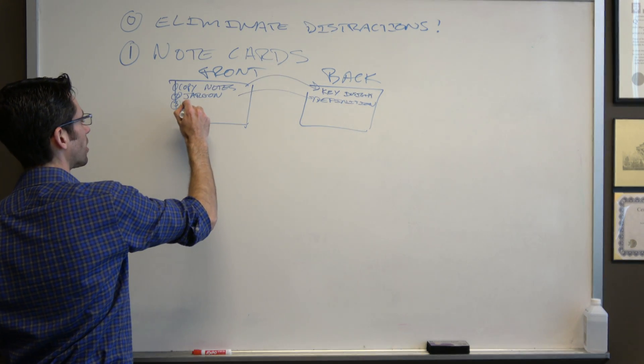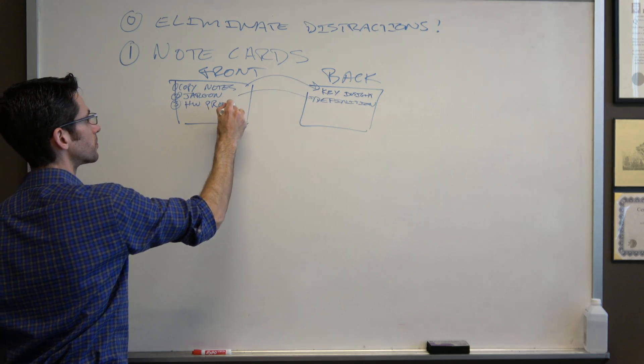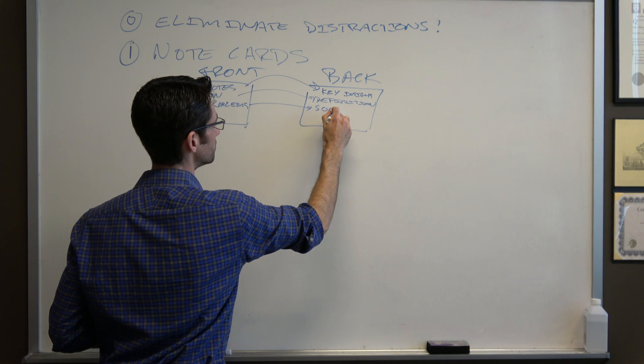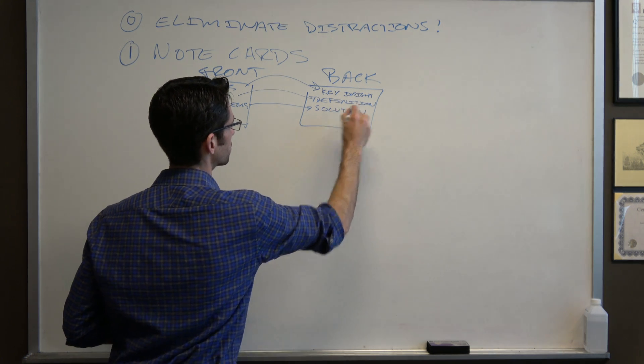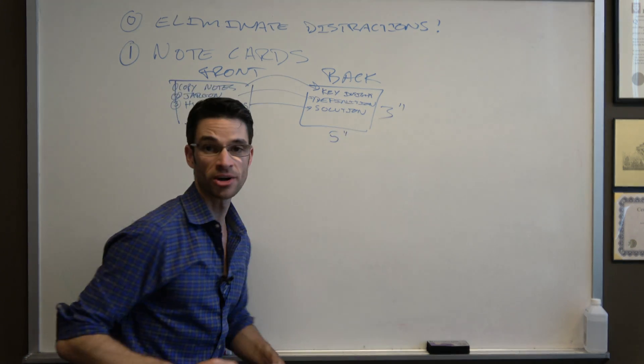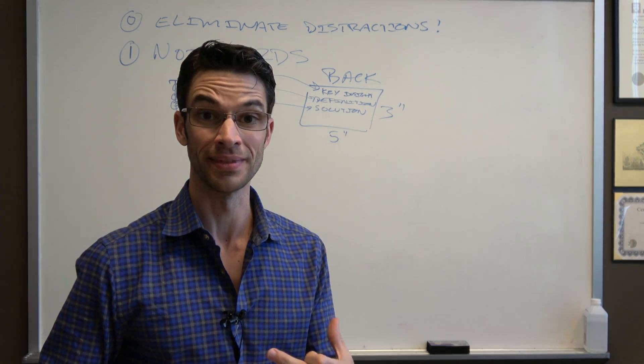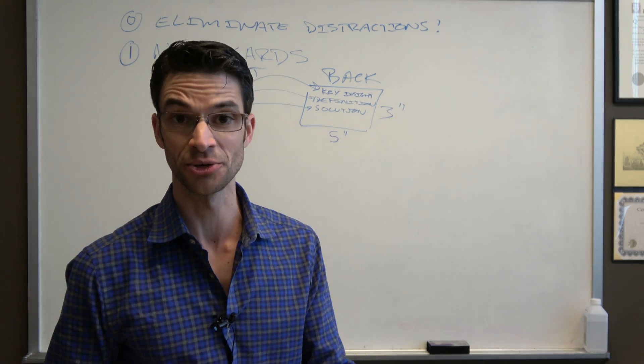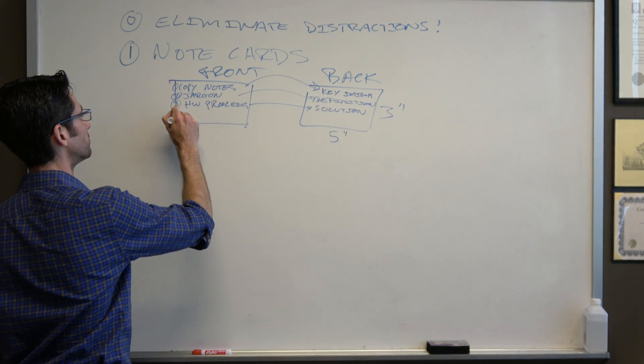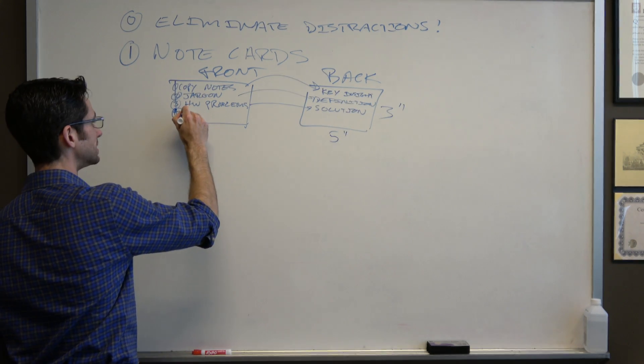Another thing that I would put here are the homework problems. And then obviously on the back goes the solution. The reason we do this on a three by five card is so that we can take it with us when we're walking around or on the train or on the bus as we're going to school.